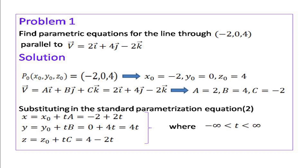Problem: Find the parametric equation for the line through (-2, 0, 4) parallel to vector V = 2i + 4j - 2k. We are given a point on the line and a vector parallel to the line. The point on the line is P0(x0, y0, z0) = (-2, 0, 4), so x0 = -2, y0 = 0, z0 = 4. Also, vector V = Ai + Bj + Ck = 2i + 4j - 2k, so a = 2, b = 4, and c = -2.